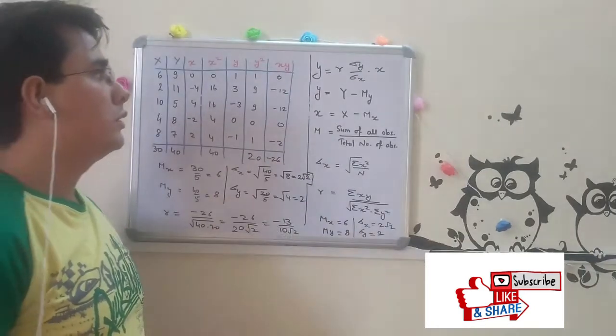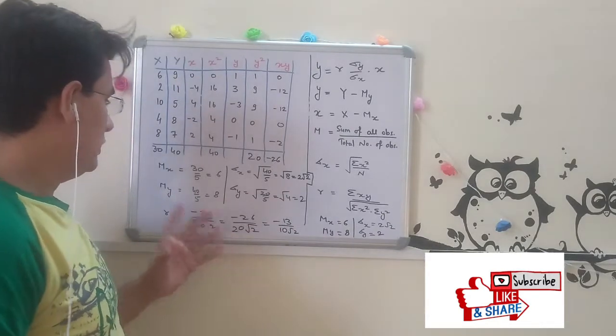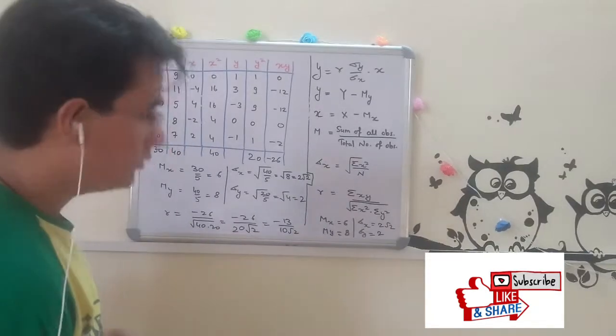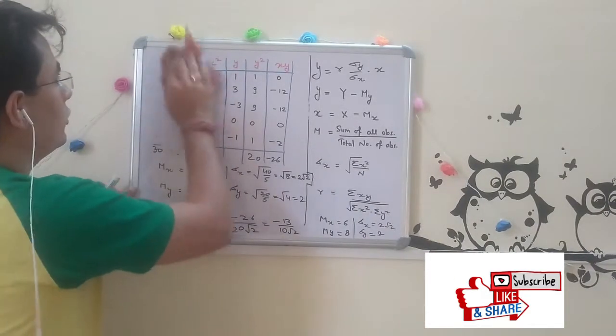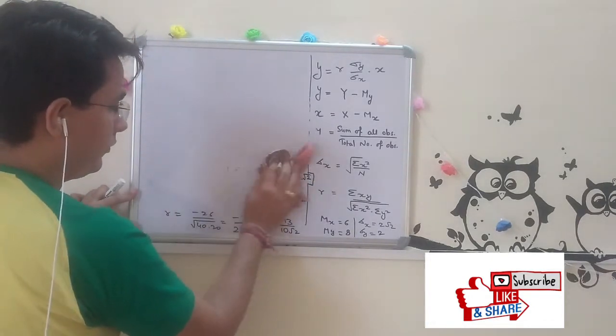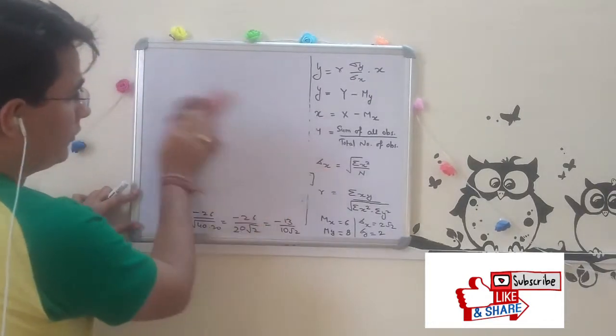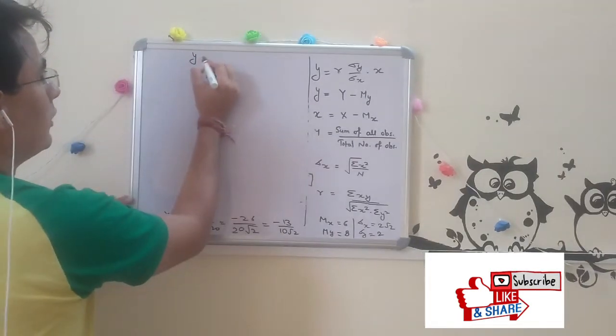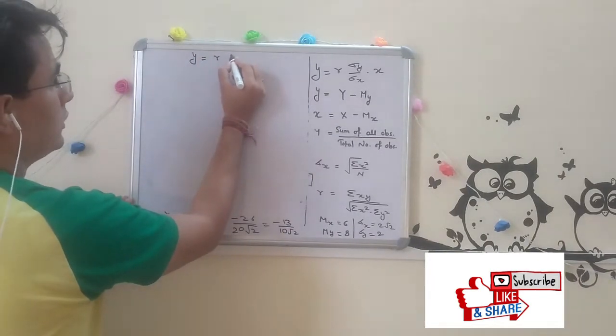Minus 13 over 2 root 2. We got everything. We got R and we got standard deviation, mean, and R everything. Let's move on to our equation part.